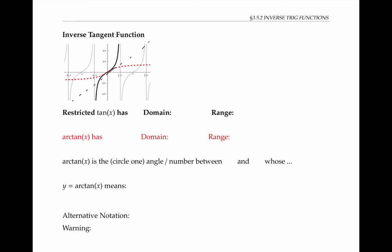which is a convenient choice since it's centered around the origin. In the previous two examples, our choice of restricted domain for sine and for cosine was also a convention that led to a conveniently defined inverse function.